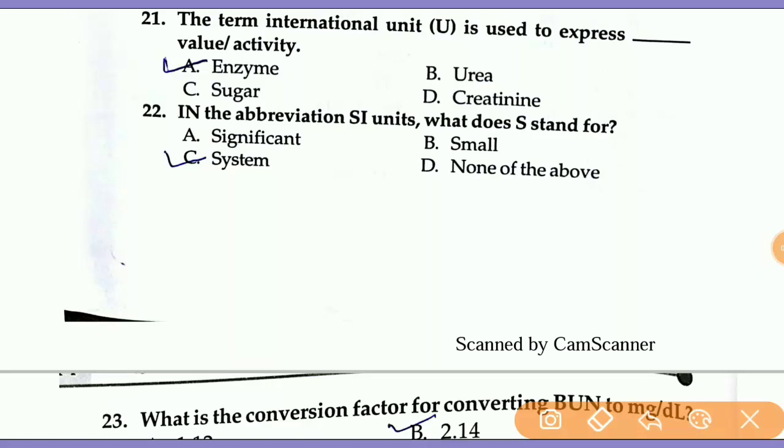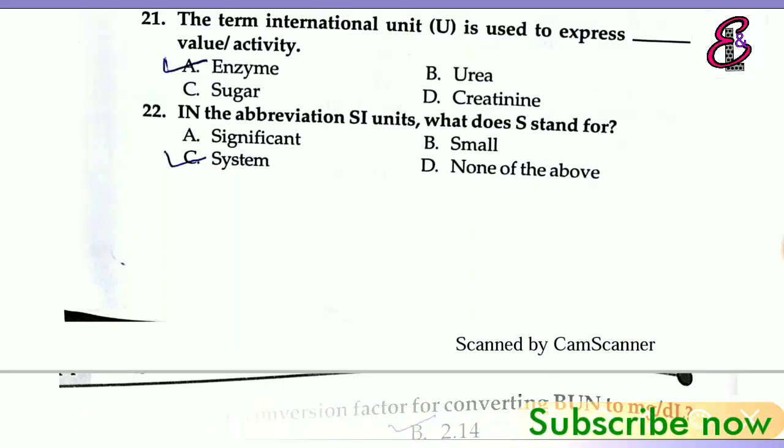Hi friends, welcome to my YouTube channel Enjoy and Learn with Limb Media. Today we'll see MCQs of SI units in this video. So let's start. Question number one: The term international unit (U) is used to express value or activity. The right answer is enzyme.